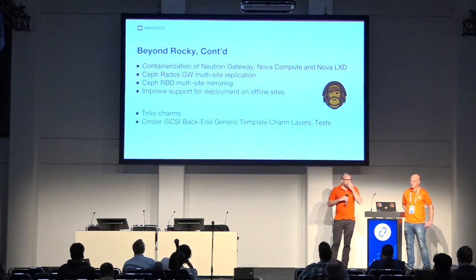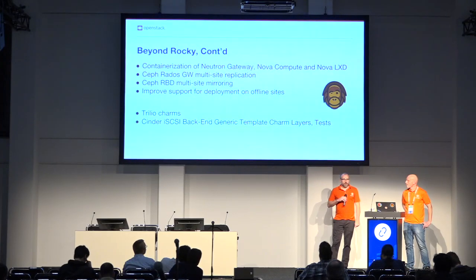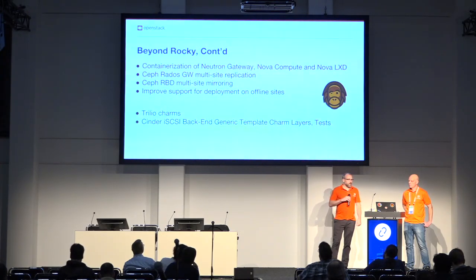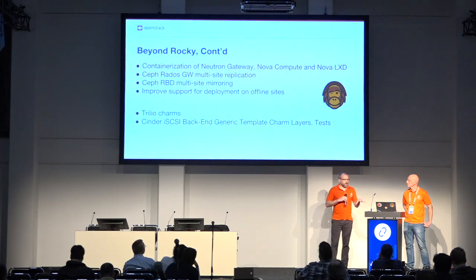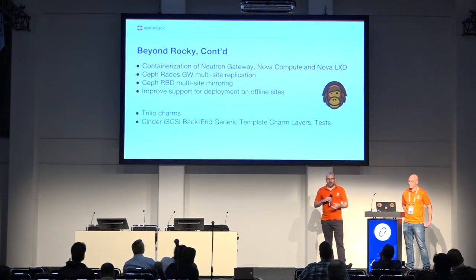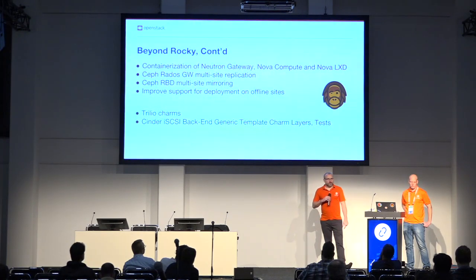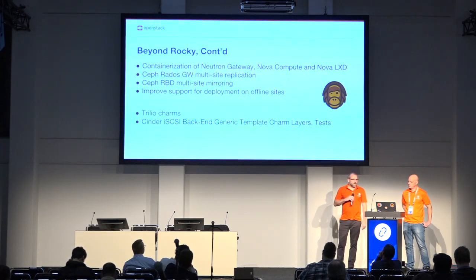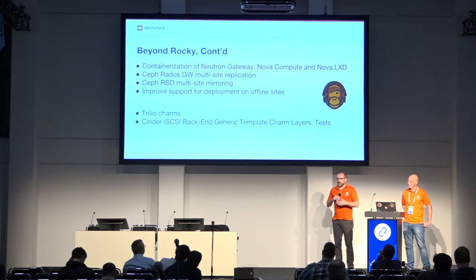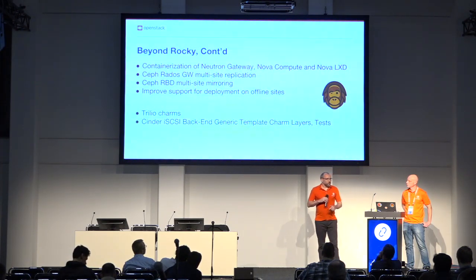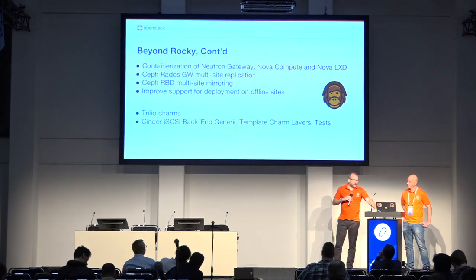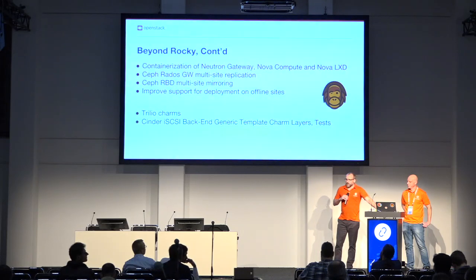We're doing work in both Juju and the charms to enable putting Neutron Gateway, Nova Compute, and Nova LXD into LXD, which allows for a denser story with convergence. We're going to look at putting out some features in the Ceph charms — the Ceph charms are part of the OpenStack charms project, even though Ceph is not part of OpenStack. We'll be putting in the RADOS site replication and RBD mirroring features into those charms. We see a lot of proxies and egress limitation environments in enterprises, so we have a few areas we're going to improve there. We're working on putting out artifacts, templates, and examples to make it easier for third parties, contributors, and vendors to integrate with existing OpenStack charms — for example, a generic iSCSI Cinder backend template, of which there are around 100 vendors. Trilio is someone we're working with as well for backup restore features.